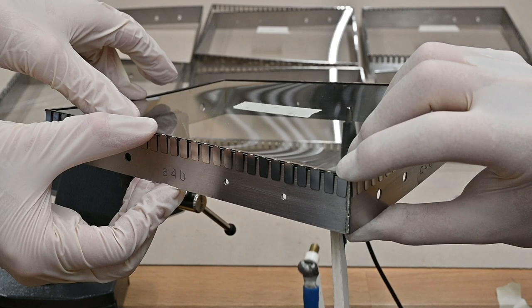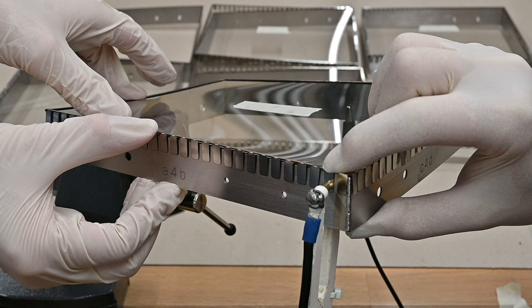Cold bent glass panelizations are a cost-effective alternative. They are produced by attaching planar glass sheets to curved frames. Importantly, this requires keeping the occurring stress within safe limits.